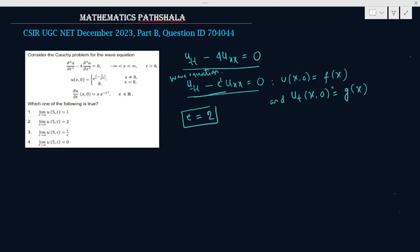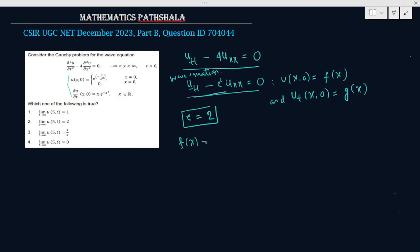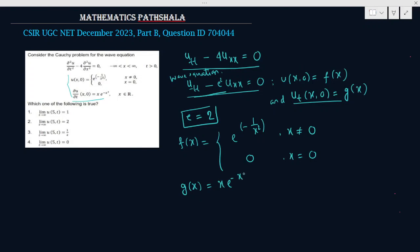Here u(x,0) equals f(x), so comparing with the given u(x,0), we get f(x) equals e to the power minus 1 by x square when x is not equal to 0, and f(x) equals 0 when x equals 0. Again comparing with del u/del t at (x,0), we get g(x) equals x into e to the power minus x square.